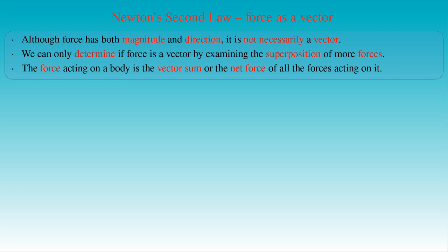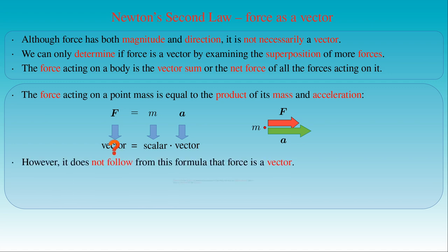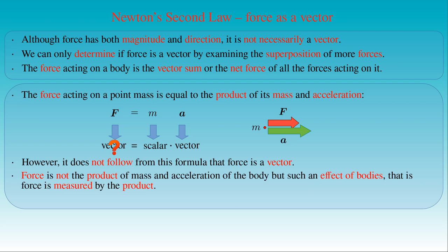This uncertainty might be surprising, since we would immediately conclude that force is a vector based on the second law of motion. The law states that force F equals mass M times acceleration A. In the right-hand side of this formula, the acceleration derived from the position vector is a vector, and mass M is a scalar. However, it does not necessarily follow from this equation that force is a vector, since force is not the product of mass and acceleration, but such an effect of bodies which is measured by this product. The superposition of several different effects can only be examined in experiments, and only those results can confirm that the vector sum of forces gives the correct description of such a superposition.